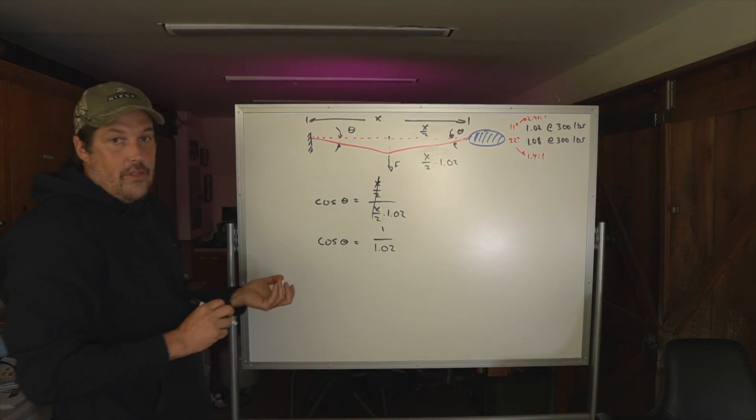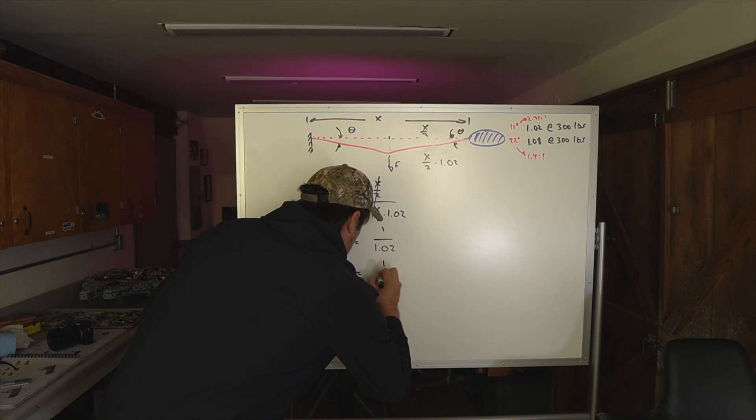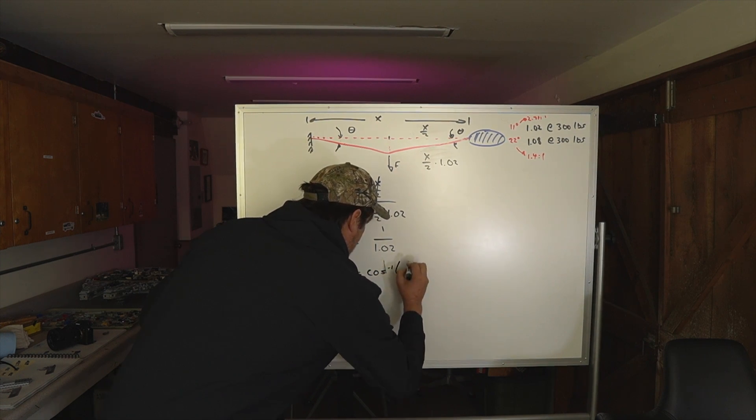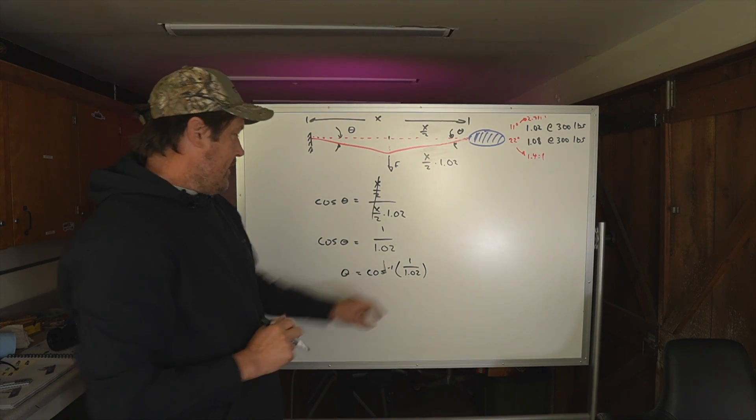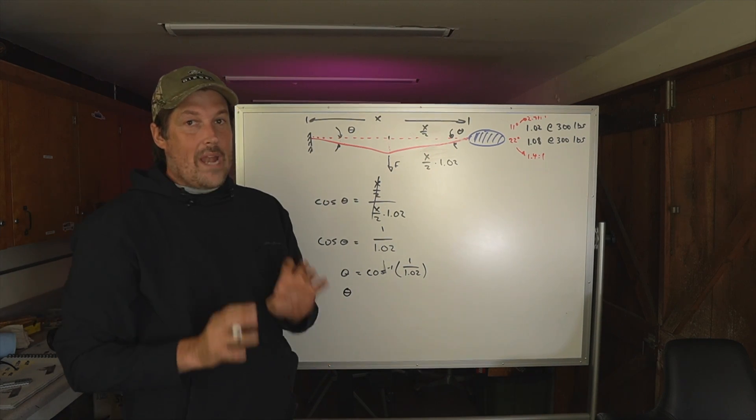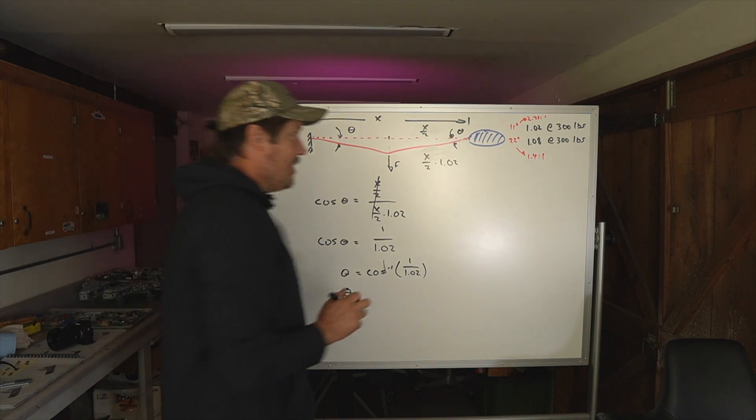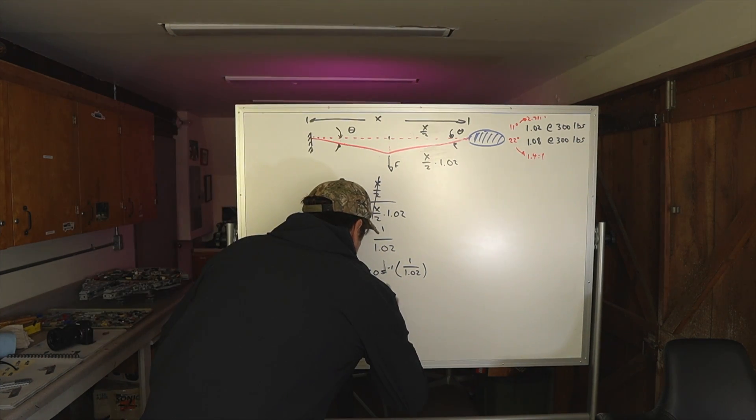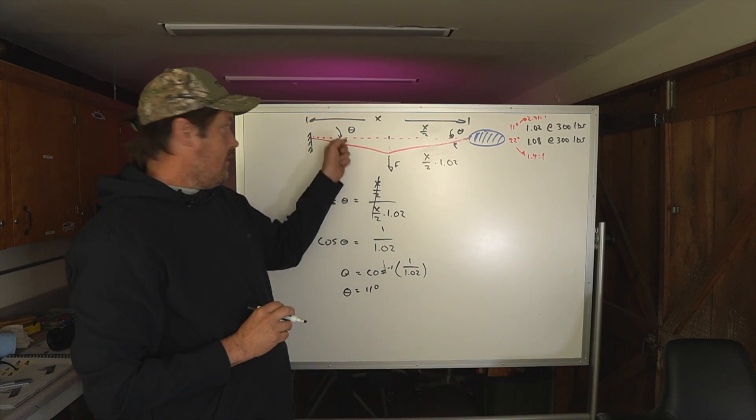And the angle theta we're looking for, theta is cosine inverse, the cosine of 1 over 1.02. If you put this into a calculator, you're going to get, and take a guess here, at what angle, if this stretch is 2%, what angle will this be? It ends up being 11 degrees. So 2% stretch means an 11 degree angle of theta.